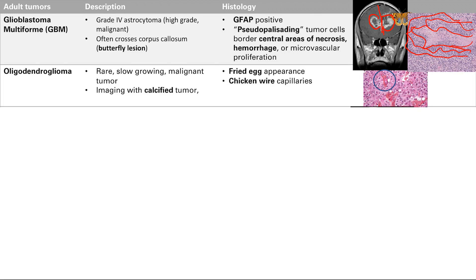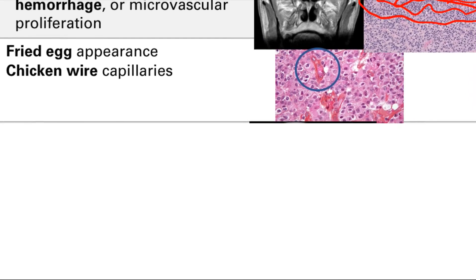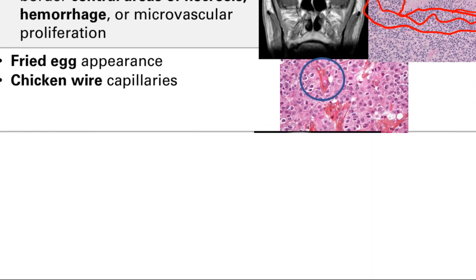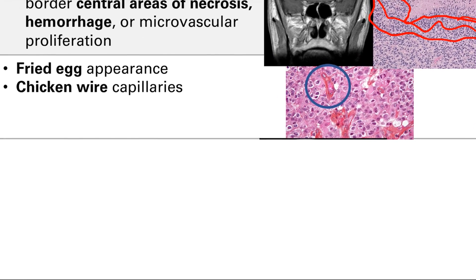The next tumor is the oligodendroglioma. It's rare and slow-growing. On imaging, it's a calcified tumor. Histology is pretty easy: we know that oligodendrocytes are fried-egg-looking cells, so the tumor is going to look the same way. And then you also see some chicken-wire capillaries here.